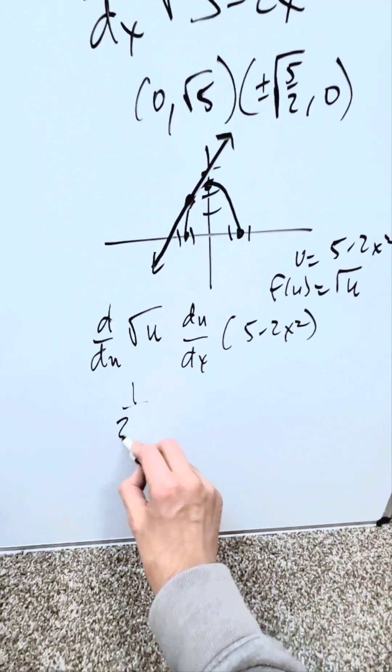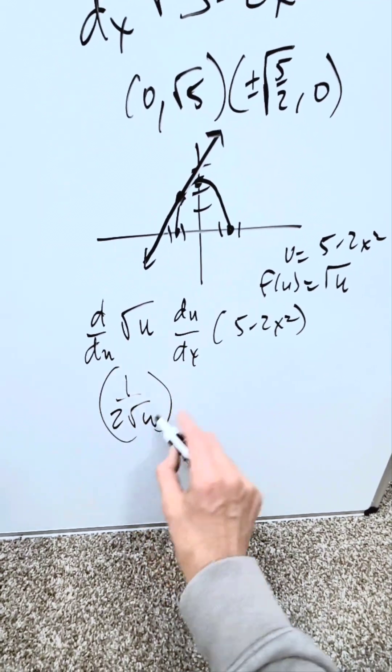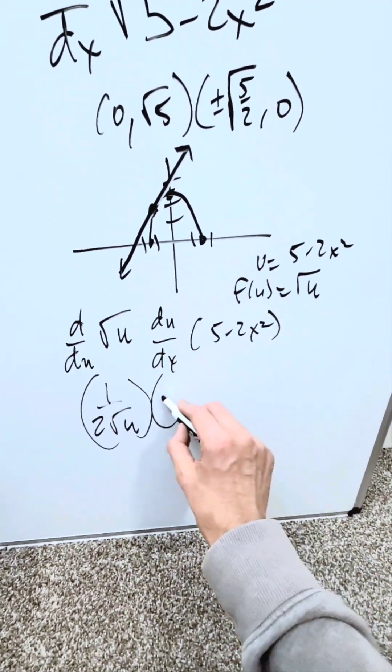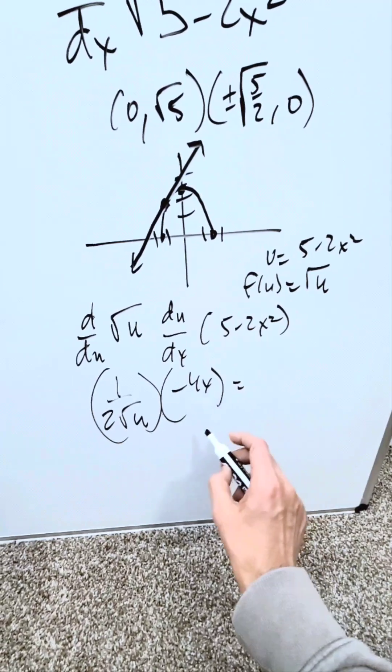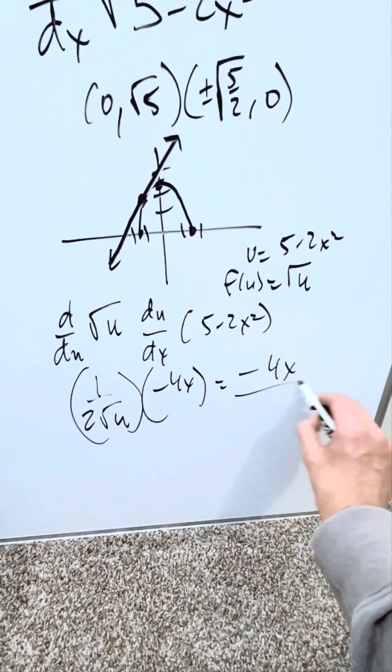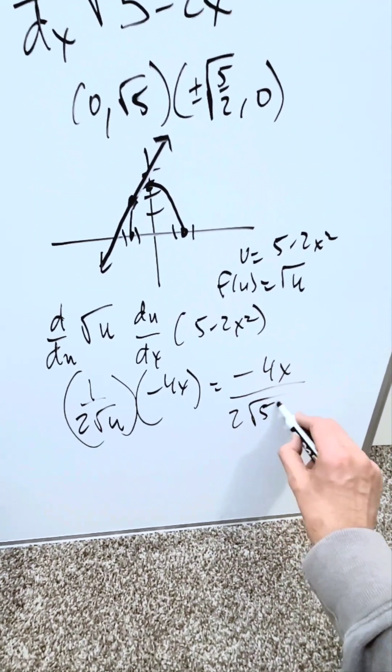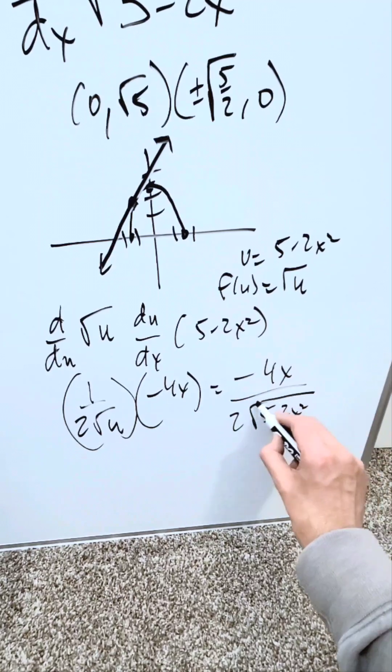What's the derivative here? It's 1 over 2√u from derivative templates. What's the derivative here? It's -4x. Combine these in a product. I'll have -4x divided by 2√u, which is √(5-2x²).